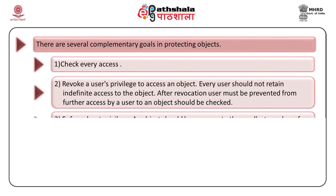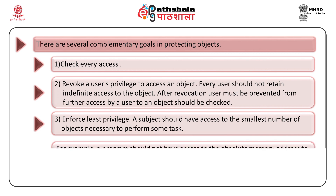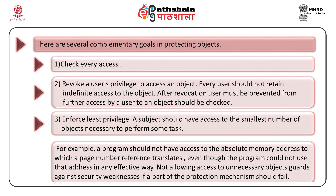The second goal is least privilege: the subject should have access to the smallest number of objects necessary for performing a task. Even an extra bit of information can be useless or harmless, but if the subject were to have access, the subject should not have that additional access. For example, a program should not have access to the absolute memory address to which the page number reference translates, so a program should not have direct access to the page translation table area.